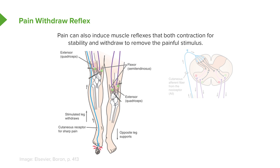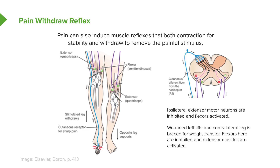First, you have this cutaneous pain receptor, which is usually a sharp pain being sent up to the spinal cord. That information is sensed at the level of the spinal cord and a reflex response results. The first thing that happens is you have a stimulation to the opposite leg to extend the quadriceps and relax the hamstrings. On the leg that is experiencing the pain stimulus, there is a withdrawal reflex.